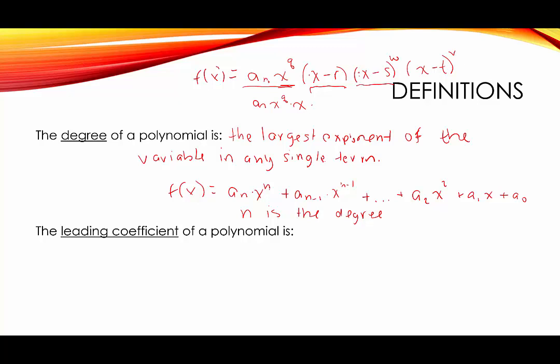In this factor we want x^w, because if we were to expand (x − s)^w, then x^w would be the term with the largest exponent for x. And then we would have times x^v. So the degree here would be if we added up the exponents: q plus 1, because there's a 1 here, plus w plus v. So this would be the degree when it's in factored form.